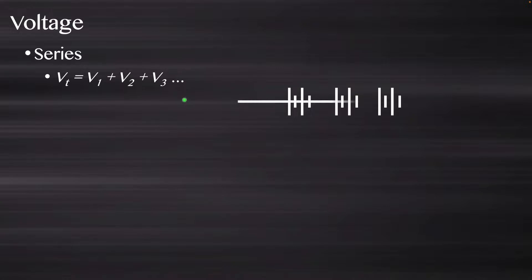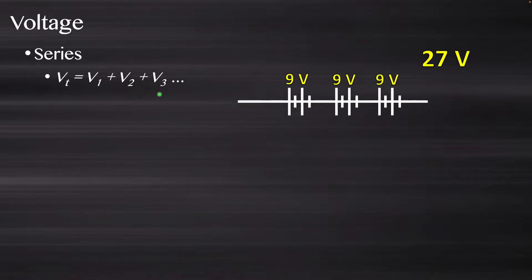If I take three batteries and hook them all in series, connecting them all with a wire — if this one was nine volts, that one's nine volts, and that one's nine volts — I just add them all together and the total voltage would be 27 volts. This is similar to something we already did: one long line and one short line represented one cell, and nine volts represents a two-cell battery — one cell hooked in series to another. So a 4.5-volt cell plus another 4.5-volt cell make up a nine-volt battery. Now we're just putting multiple nine-volt batteries together to get a total of 27 volts.